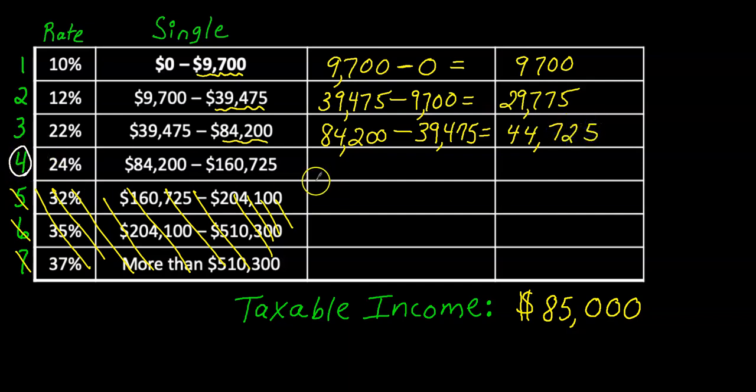Now I've got, now I'm at row four. Don't mindlessly just keep doing this. Once I get to row four, the row I've identified is slightly different. I need to figure out how much $85,000 is over $84,200. And I did that at the beginning. We did that in our heads.